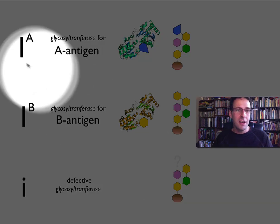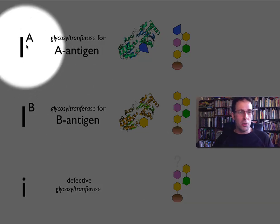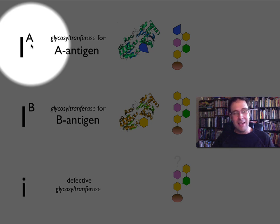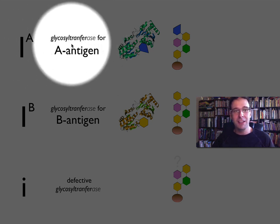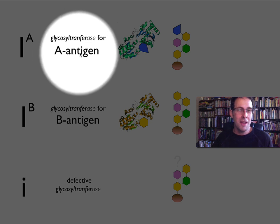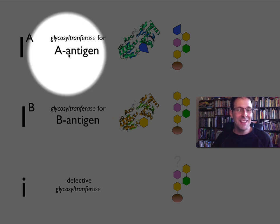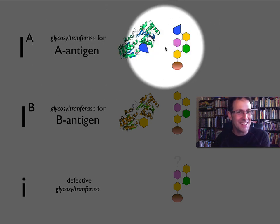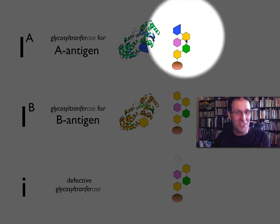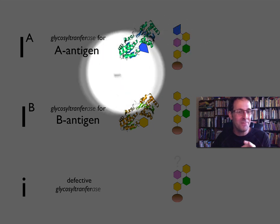The first of those alleles we call Big I-A. Big I-A encodes a version of that glycosyltransferase enzyme that adds N-acetylglucosamine — the blue molecule — onto the end of the H-antigen.